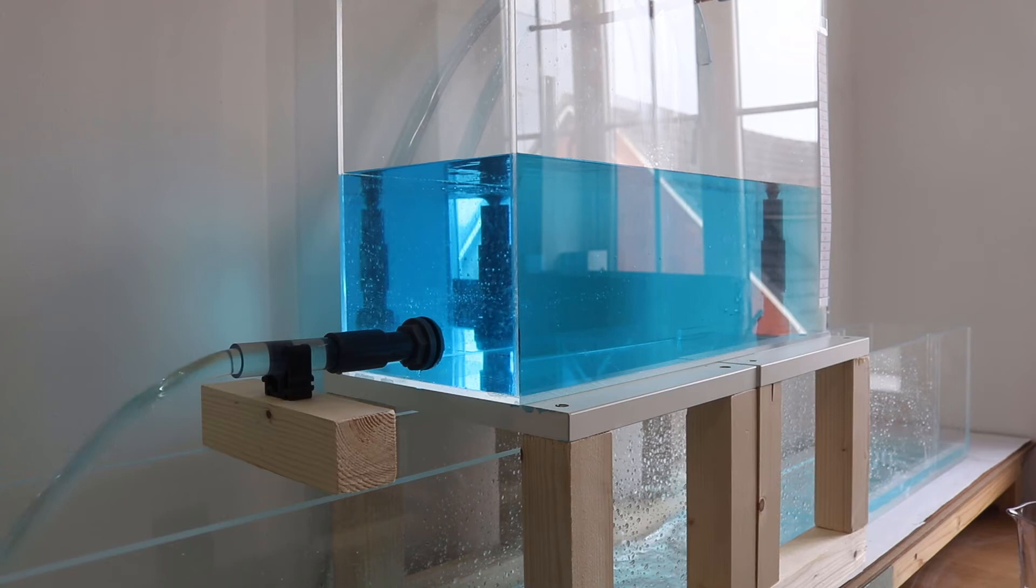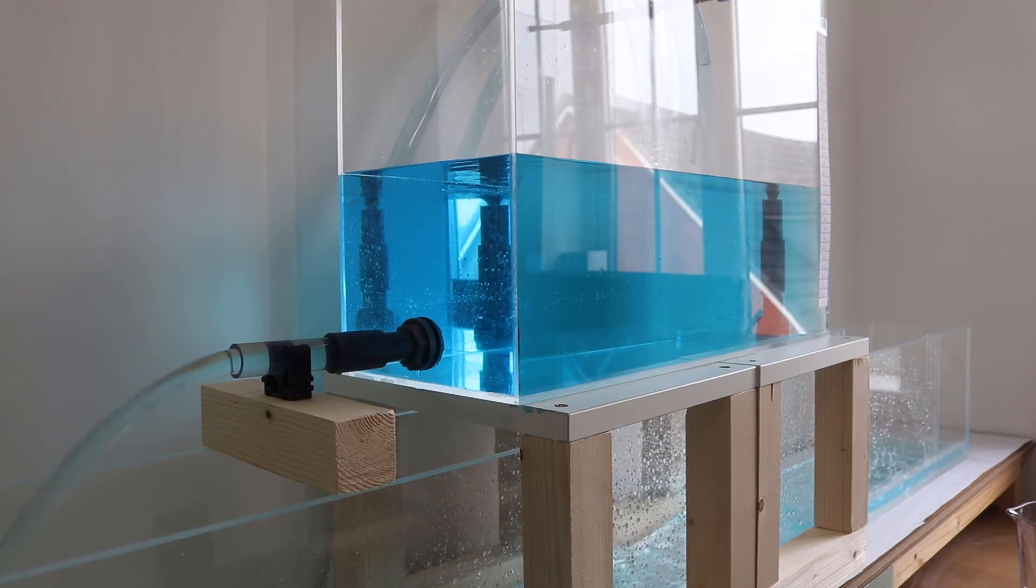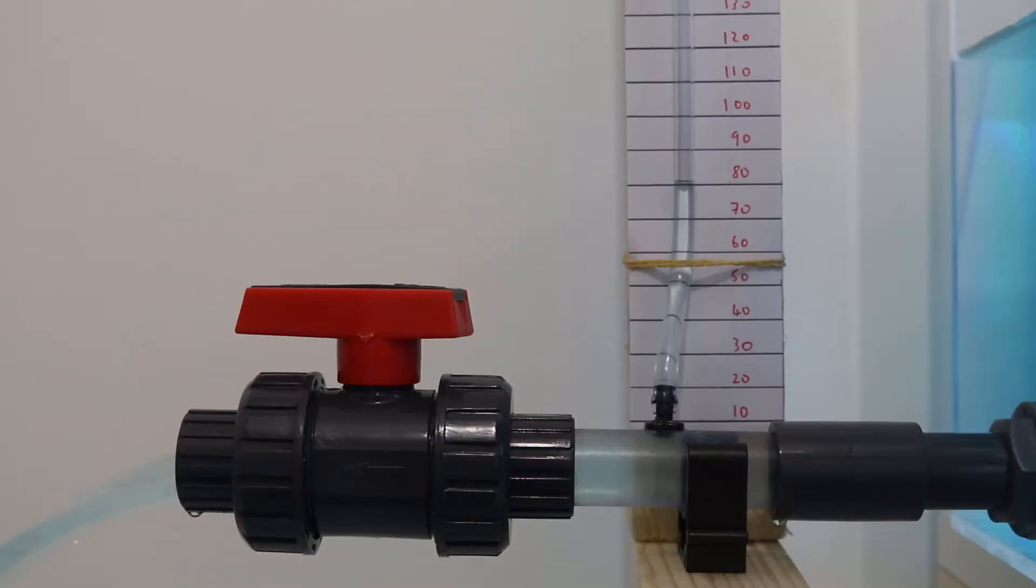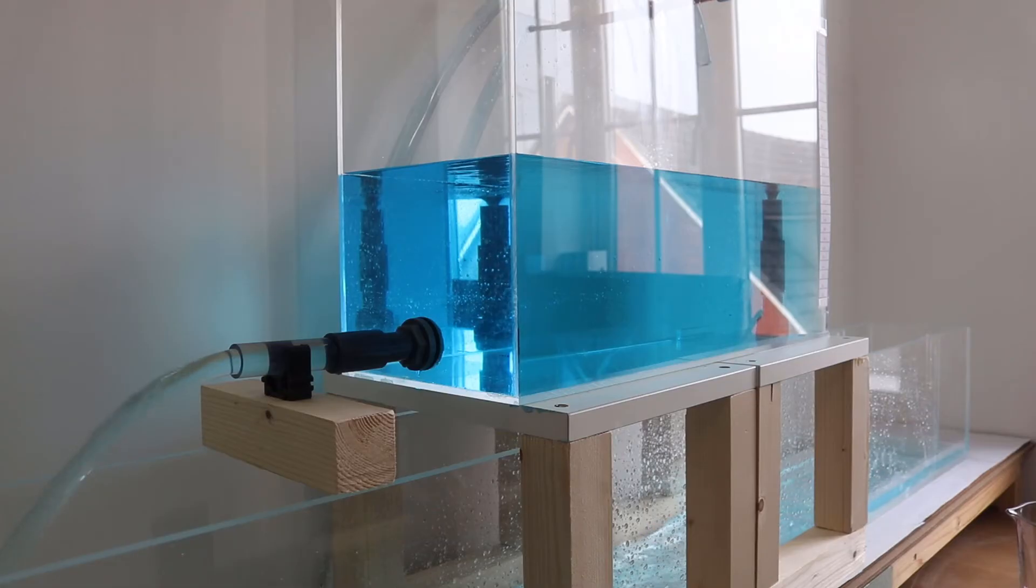In the last lesson we used Bernoulli's equation to work out the mean velocity of water in a pipe, and also the pressure of water in a pipe. The key to the method we were using is that we were assuming there were no energy losses in the system.